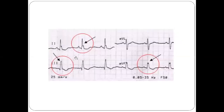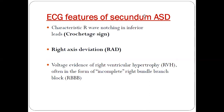You can see here notching at the tip of the R wave — notching in leads 2, 3, and aVF. This is suggestive of the Crochetage sign and is suggestive of ostium secundum ASD with a large defect and a good amount of left-to-right shunt.